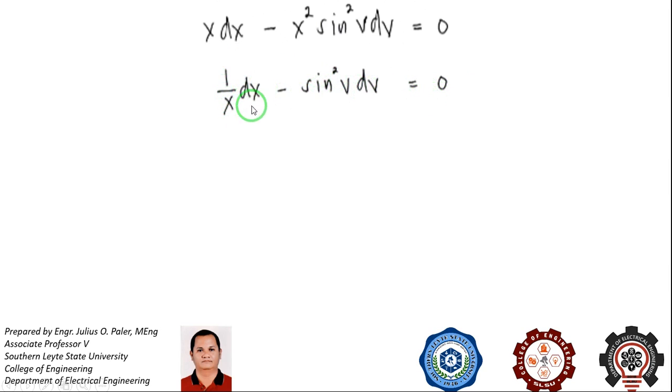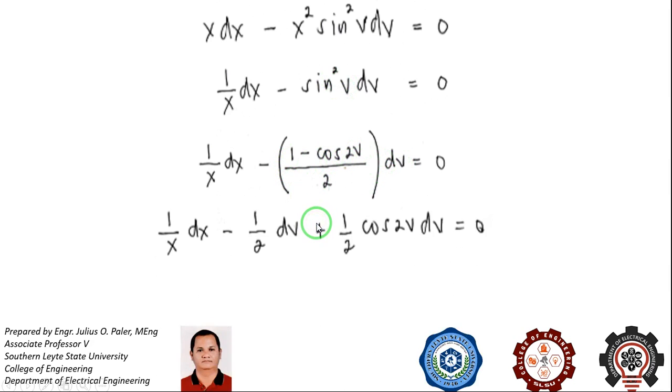This integral term will lead us to logarithm. The second term, however, we need to use an identity for sin squared of v, which is 1 minus cosine of 2v over 2. Now distributing dv, you will have copy the first term, then you will have minus 1 half dv and minus minus will give us positive 1 half cosine of 2v dv.